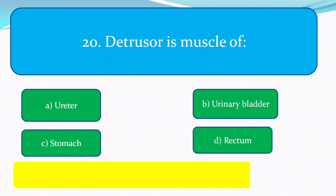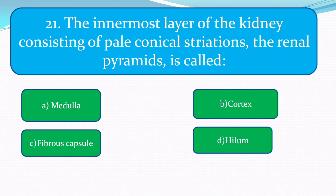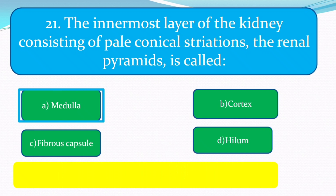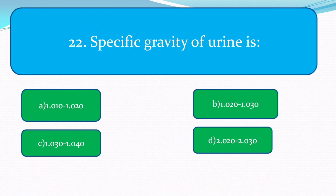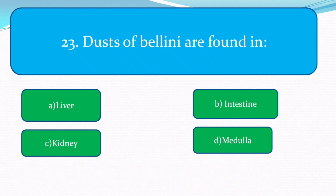The detrusor is the muscle of the urinary bladder. The inner muscle layer of the kidney consisting of pale conical structures called renal pyramids is called the renal medulla. The correct answer is renal medulla. The specific gravity of urine — pause the video and guess the correct answer — is 1.002 to 1.030.